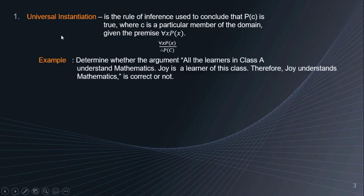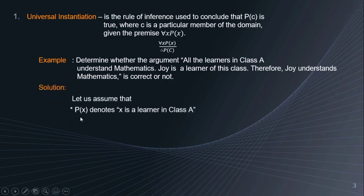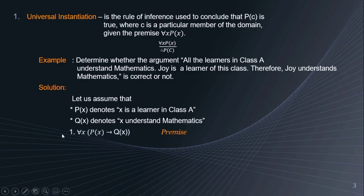To understand this rule better, we have an example. Determine whether the argument — all the learners in class A understand mathematics; Joy is a learner of this class; therefore, Joy understands mathematics — is correct or not. Let us assume that P(x) denotes x is a learner in class A, and Q(x) denotes x understands mathematics. Our first premise is: for all x, P(x) implies Q(x). Our second premise is P(Joy), because Joy is a learner of this class.